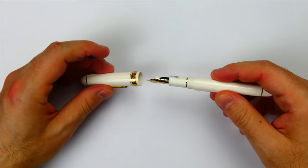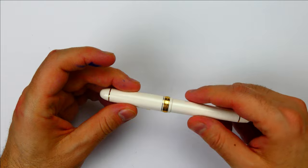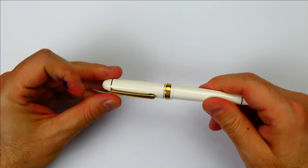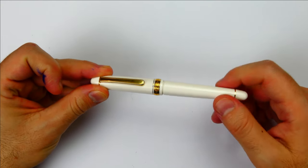One more thing about the cap. All Platinum 3776 models use the so-called slip and seal mechanism. Practically, the cap has an inner cap that is spring loaded and prevents the pen from drying out, sealing perfectly the nib.